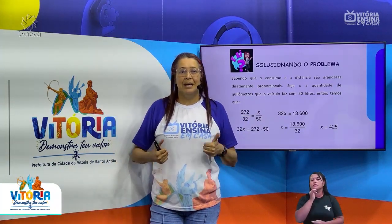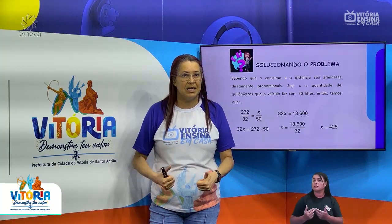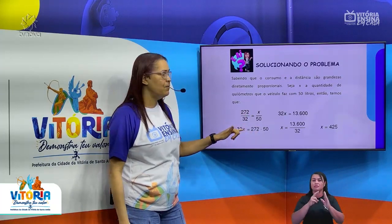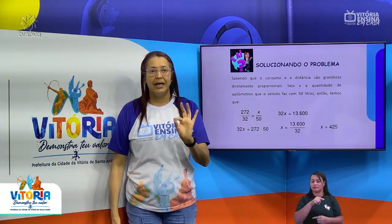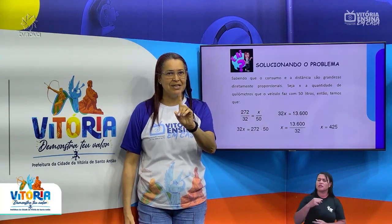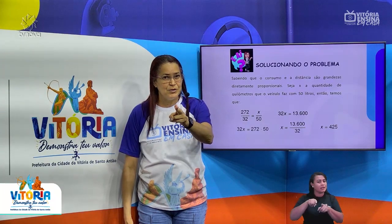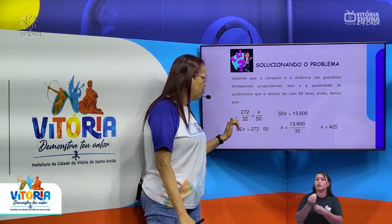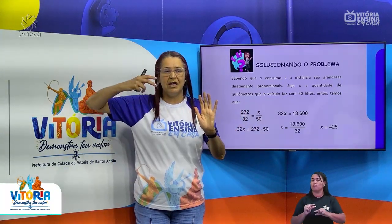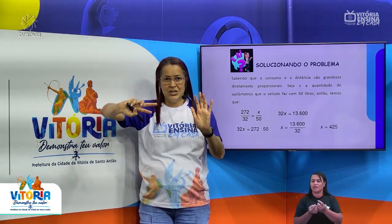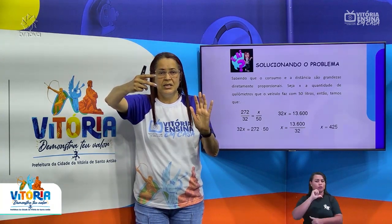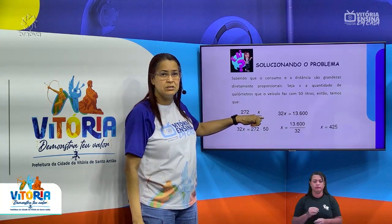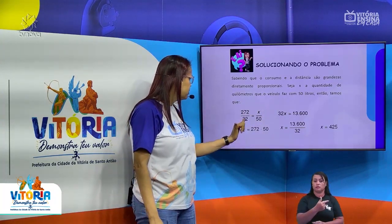Seja X a quantidade de quilômetros que o veículo faz com 50 litros. Como são diretamente proporcionais, temos que 272 está para 32 assim como X está para 50. Para resolver, basta cruzar a multiplicação — regra de proporção, meios pelos extremos. Uma dica: toda vez que for trabalhar com inversamente proporcional, monta-se da mesma forma, só invertendo uma das razões. Aqui, como é diretamente proporcional, fazemos direto: 272 vezes 50 igual a 32 vezes X.